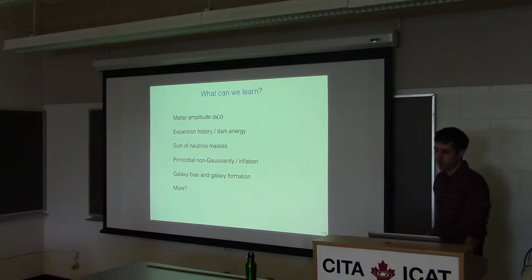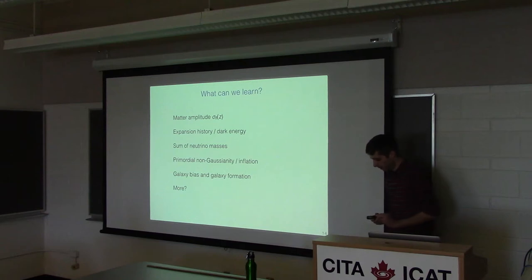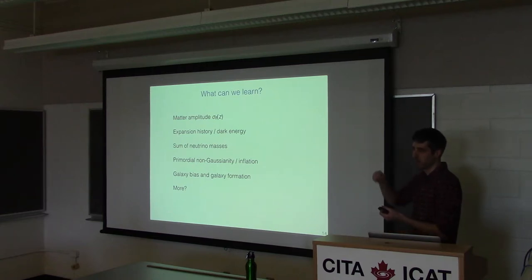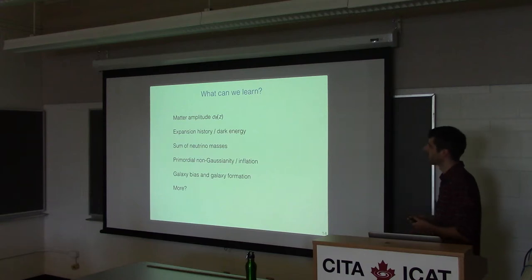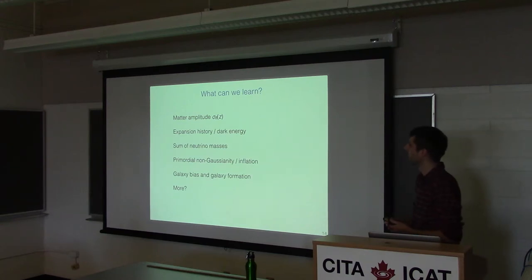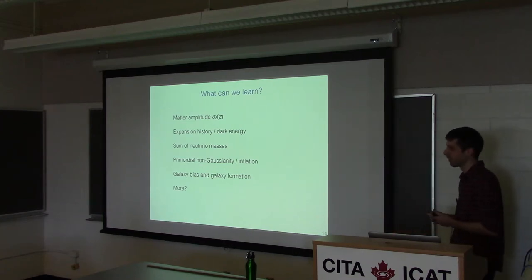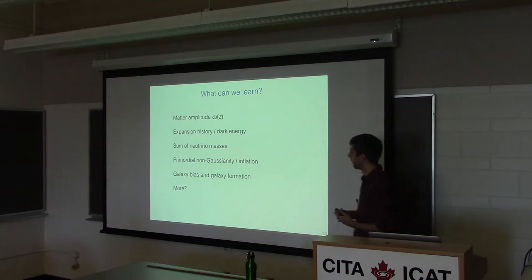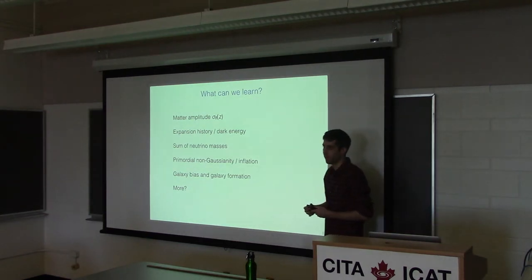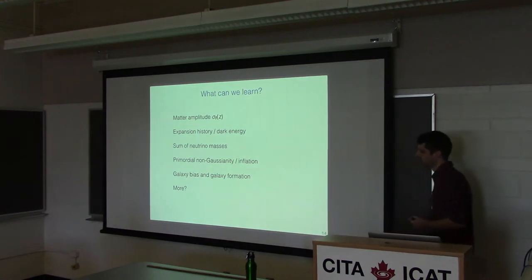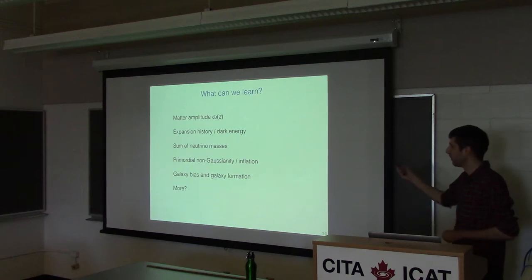What can we learn from this? A number of things: we can learn the matter amplitude sigma 8 as a function of redshift by cross-correlating CMB lensing with galaxies at different redshifts. We can measure the expansion history, which is sensitive to dark energy. We might be able to see neutrino masses. One application I'll focus on is measuring primordial non-Gaussianity from inflation. We can also use these cross-correlations to constrain galaxy bias and learn about galaxy formation.